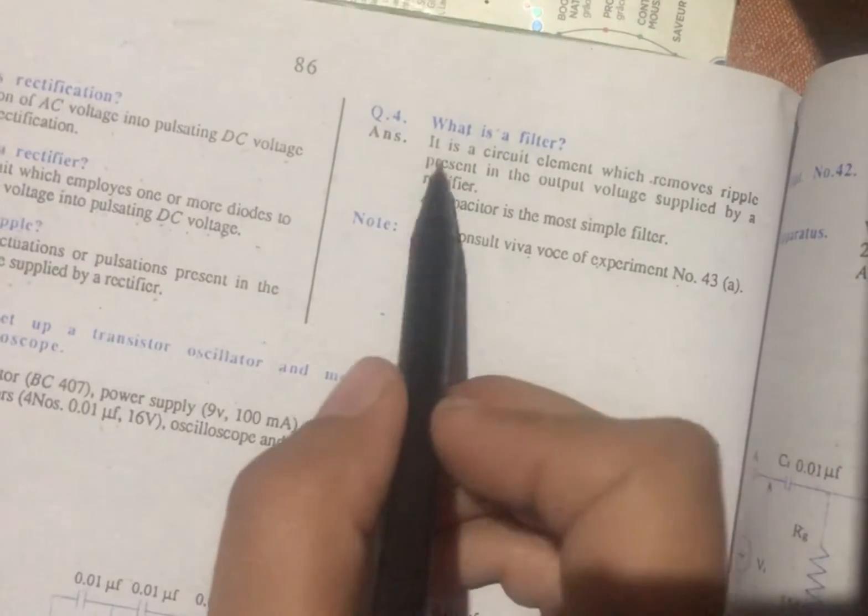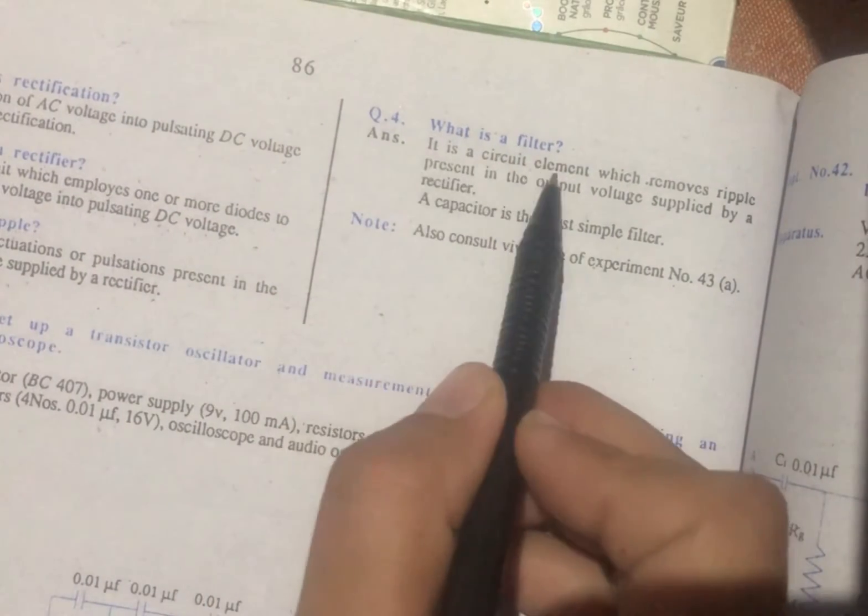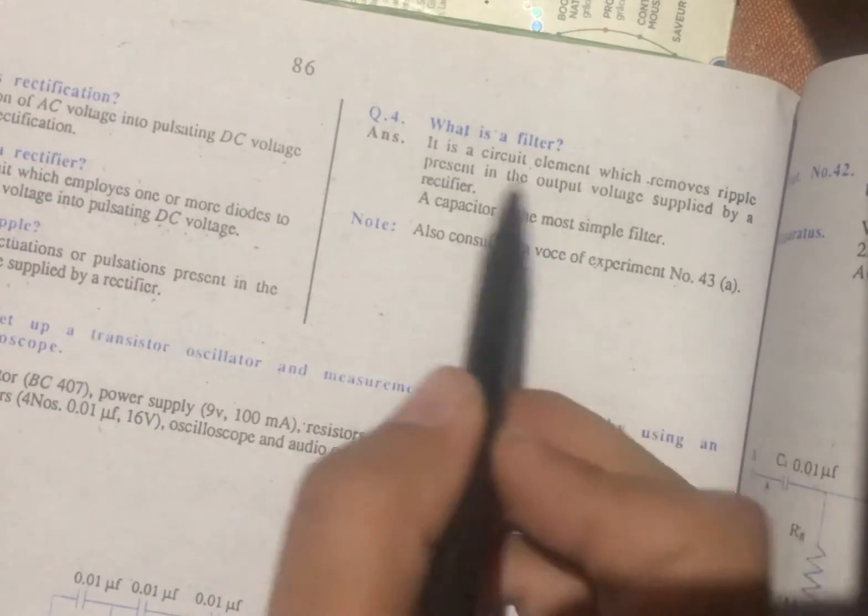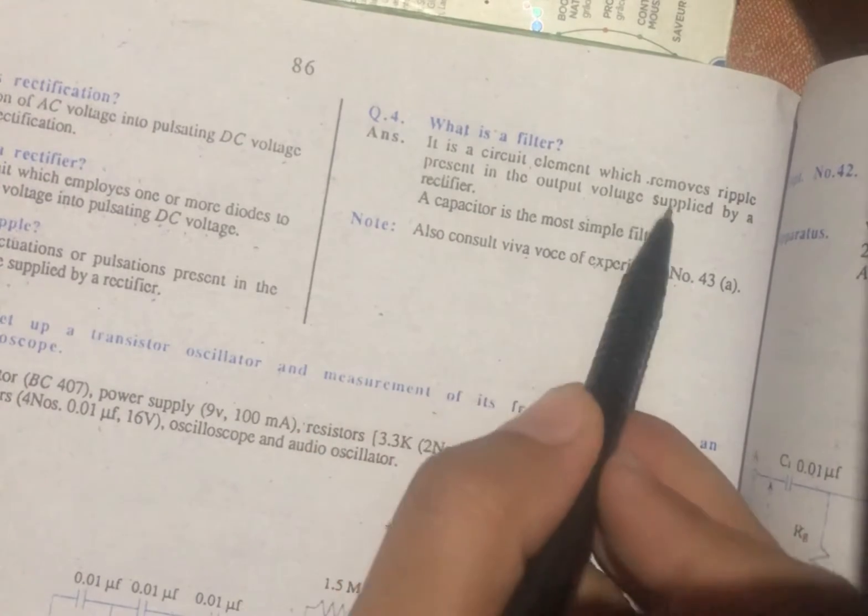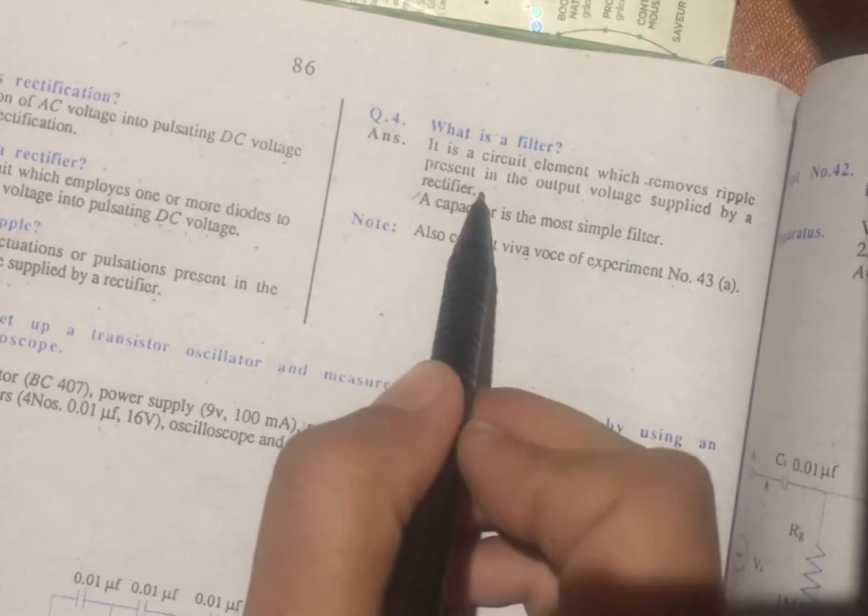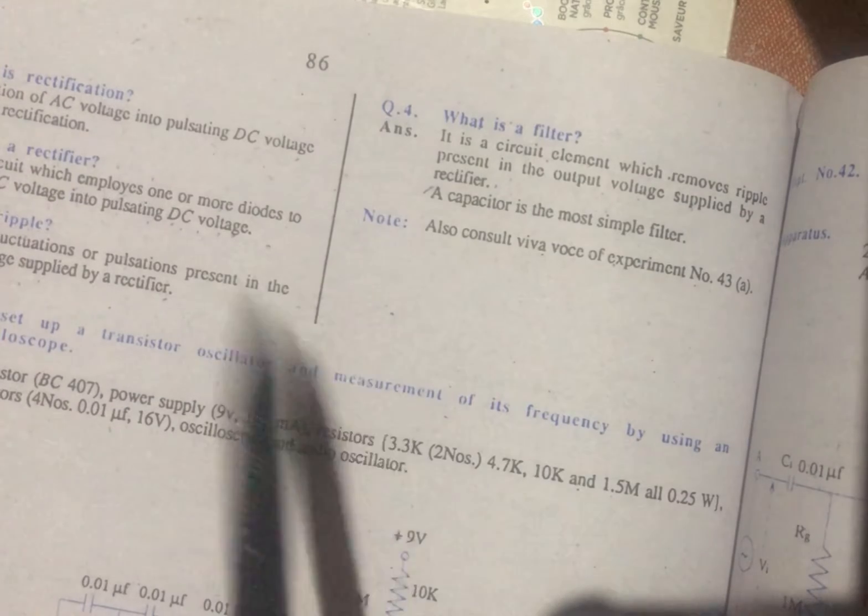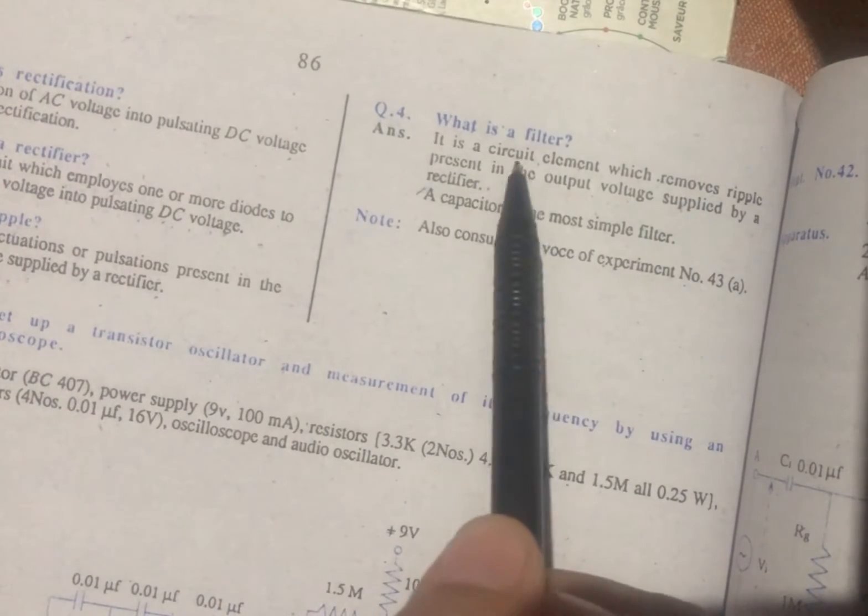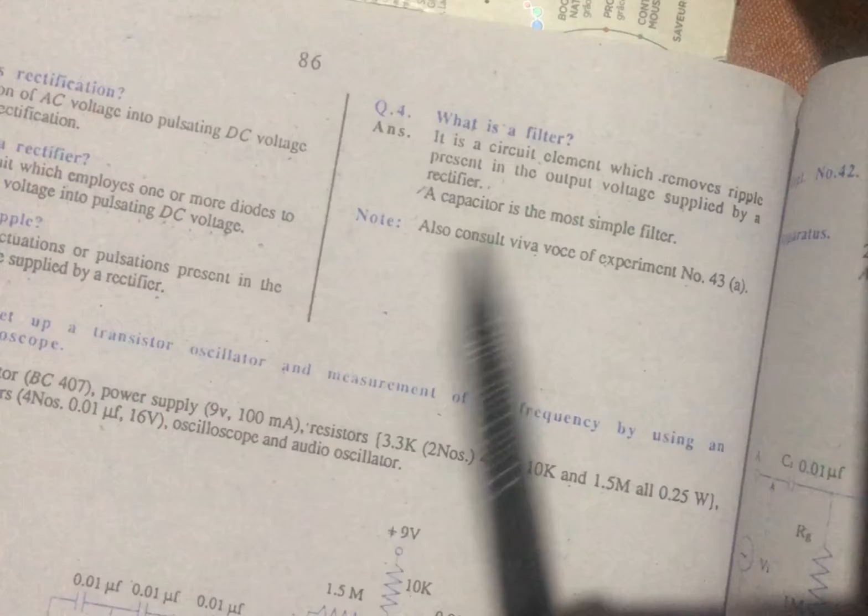What is a filter? It is a circuit element which removes ripple present in the output voltage supplied by a rectifier. We have the circuit in the output voltage and the pulsing.